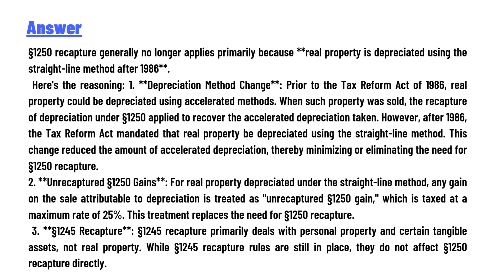Here's the reasoning. Number one: depreciation method change. Prior to the Tax Reform Act of 1986, real property could be depreciated using accelerated methods. When such property was sold, the recapture of depreciation under Section 1250 applied to recover the accelerated depreciation taken. However, after 1986, the Tax Reform Act mandated that real property be depreciated using the straight line method, minimizing or eliminating the need for 1250 recapture.